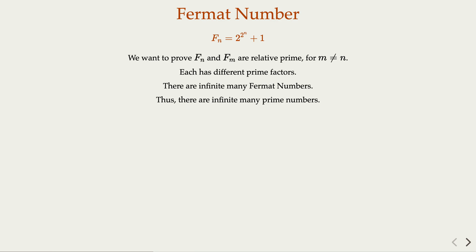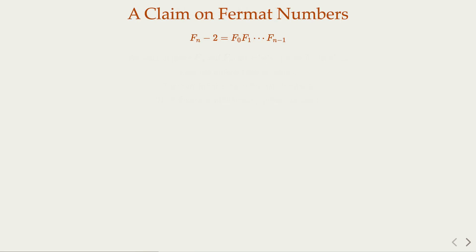Of course, how do we prove that two Fermat numbers are relatively prime? So we're going to start with a claim on the relation of Fn with the remaining ones, F0 up to Fn minus 1. So this equation can be proven using mathematical induction.